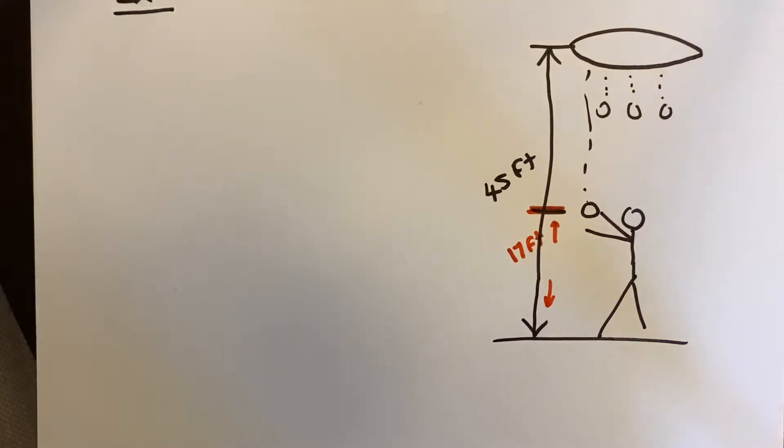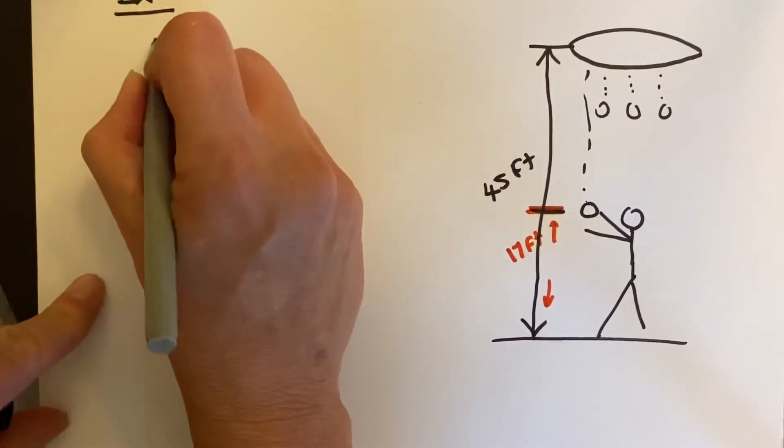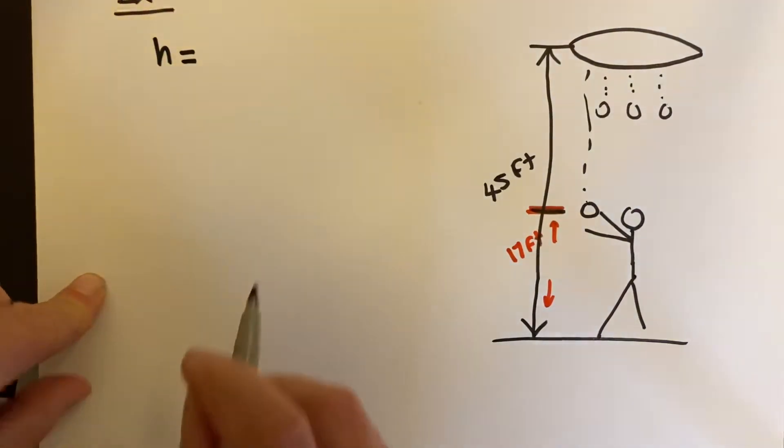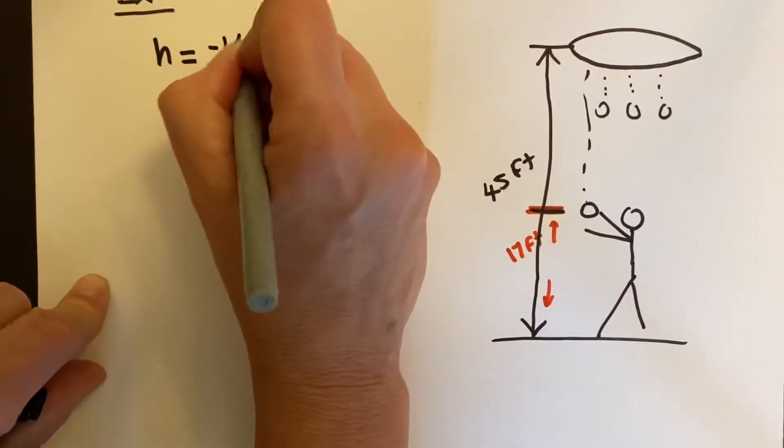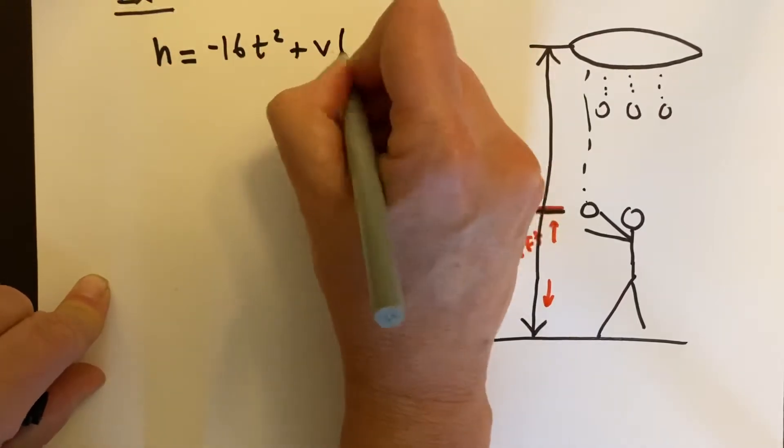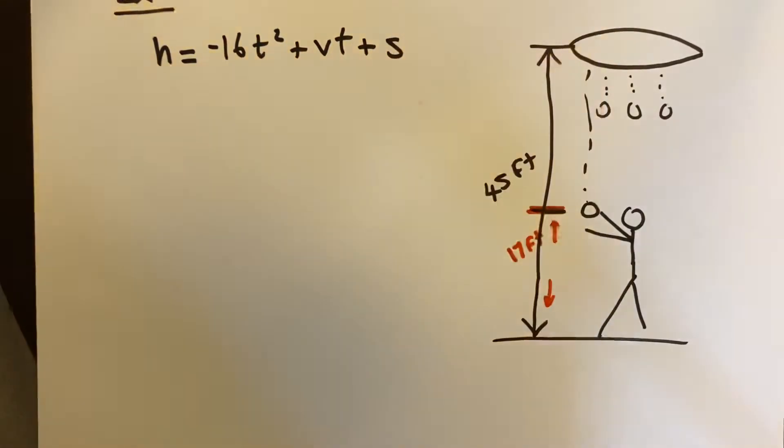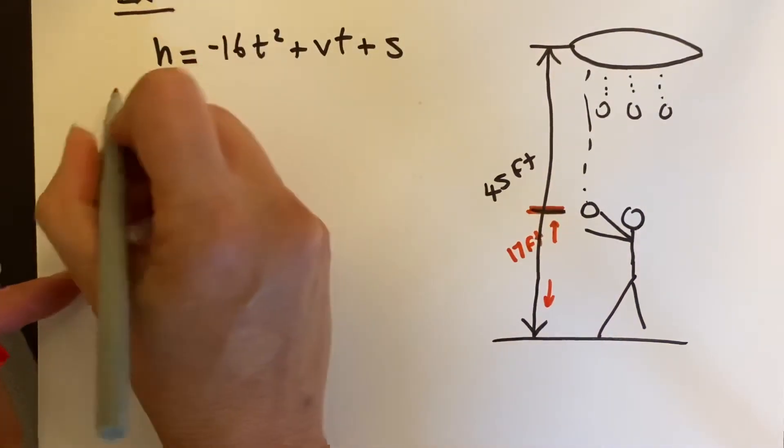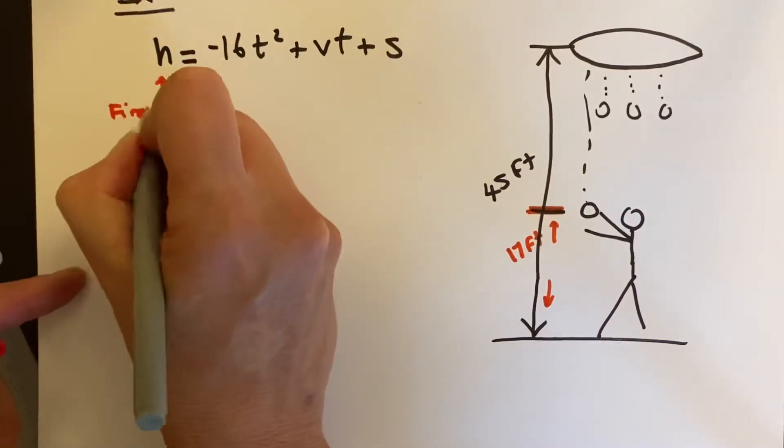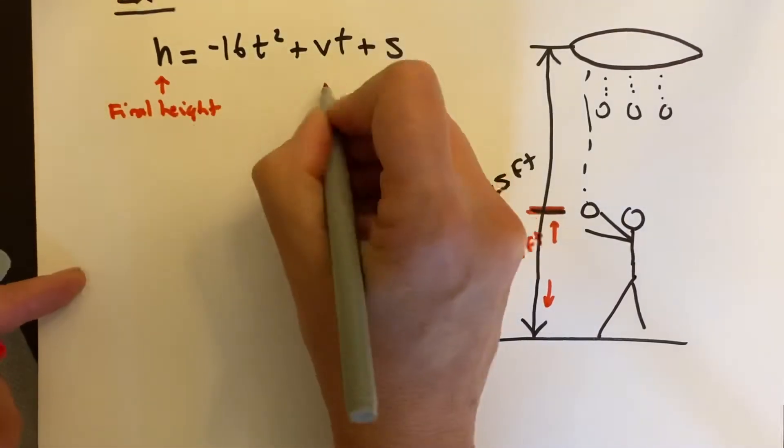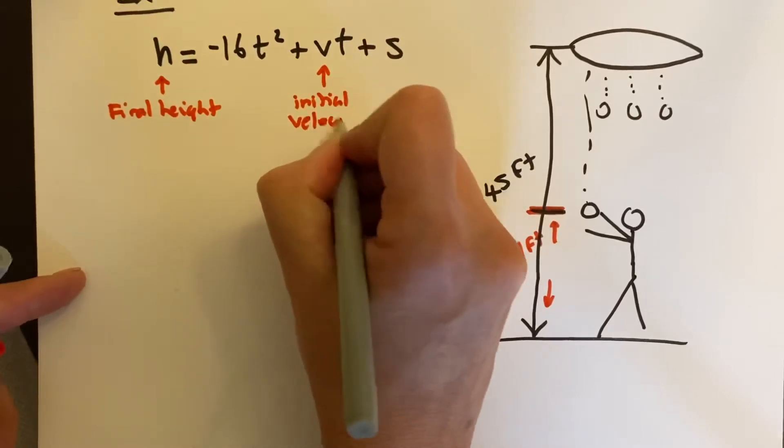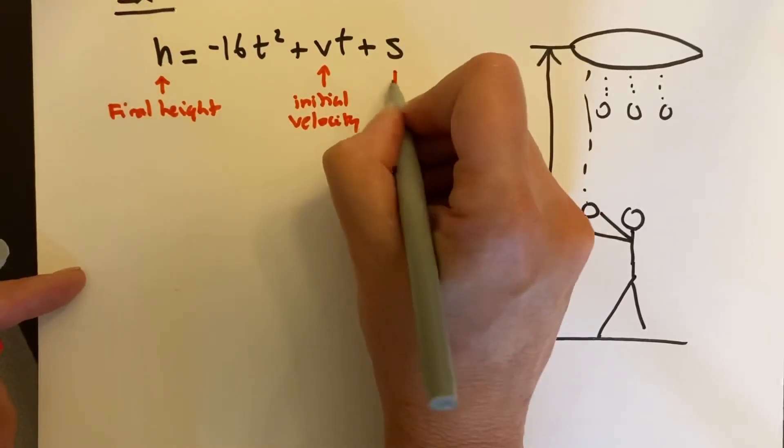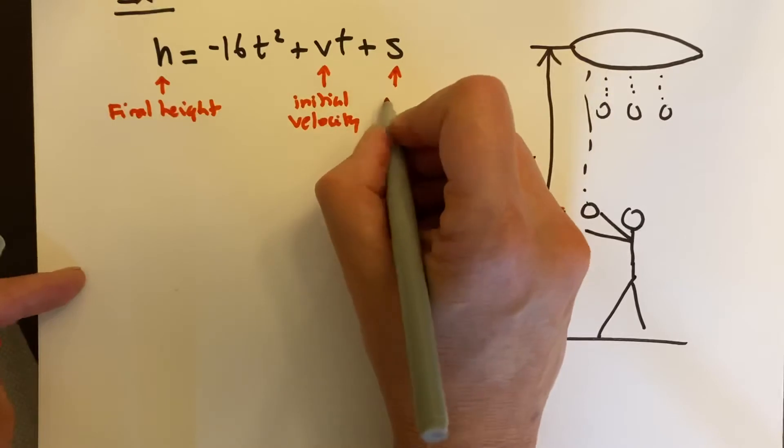You guys should be super familiar with this equation. I say it over and over now, so I'm going to stop saying it. It's the vertical motion model: H equals negative 16t squared plus vt plus s. H is final height, V is the initial velocity or initial speed on the tennis ball, and s is the initial height.